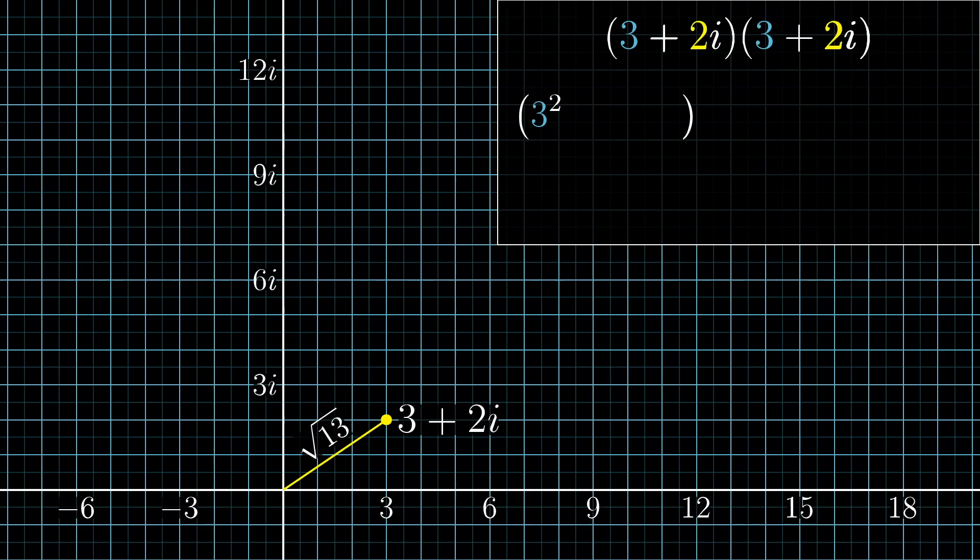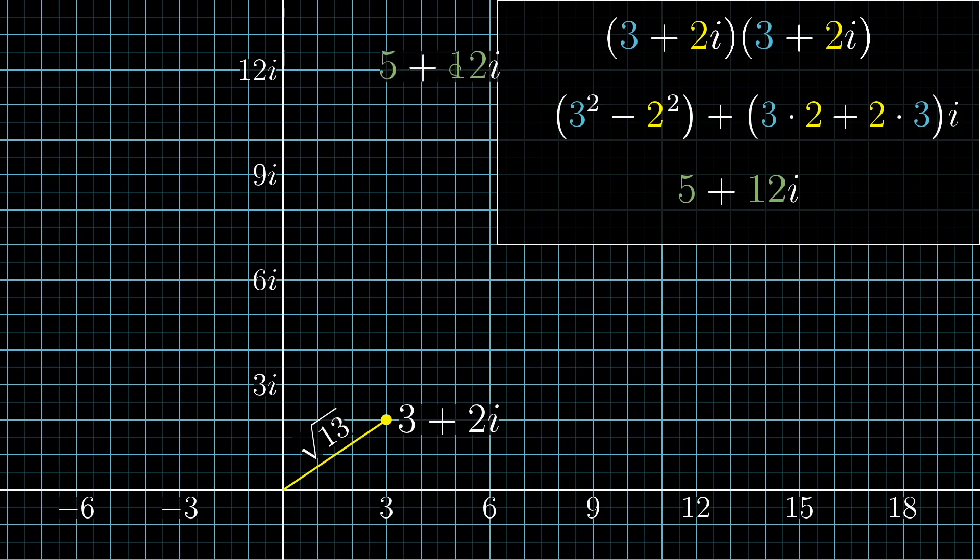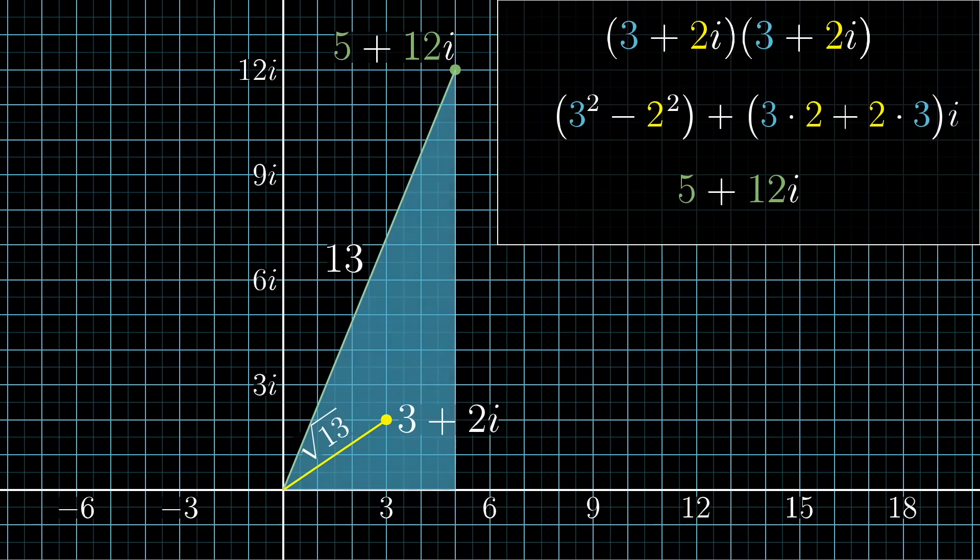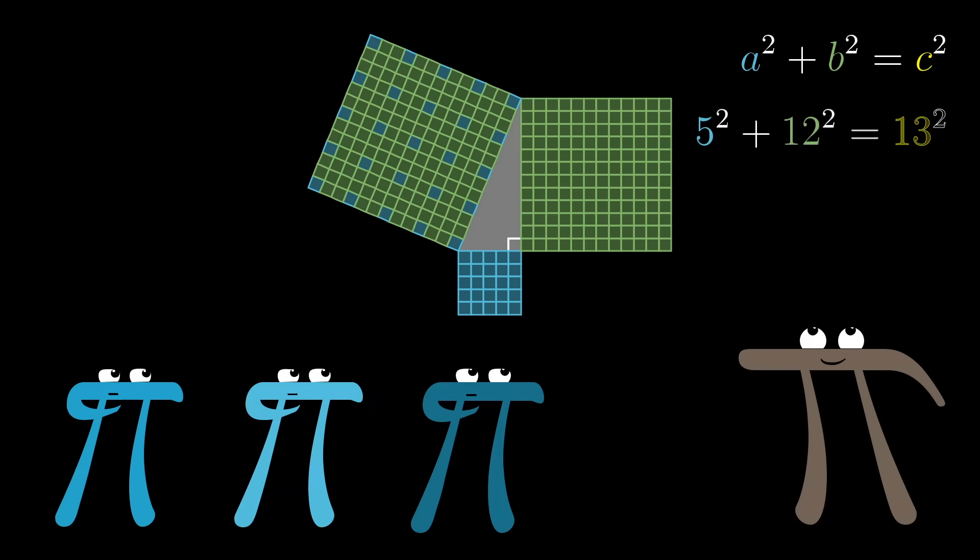Now multiply this complex number by itself. The real part comes out to 3 squared plus 2i squared, which is 9 minus 4, and the imaginary part is 3 times 2 plus 2 times 3. So the result is 5 plus 12i, and the magnitude of this new number is 13, the square of the magnitude of our starting number, 3 plus 2i. So simply squaring our randomly chosen lattice point gives us the 5-12-13 triangle.